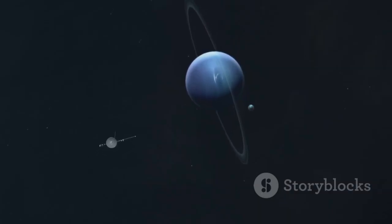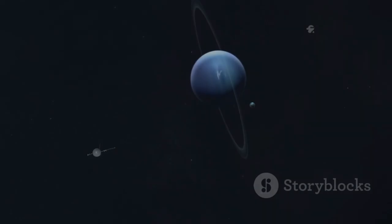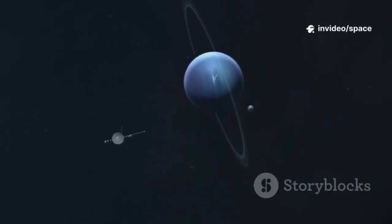Suddenly, Voyager's puzzling data made sense. It was journeying through this layered magnetic foam. Our solar system doesn't just blend into the galaxy, it's wrapped in a clear protective shell.